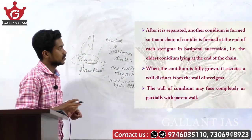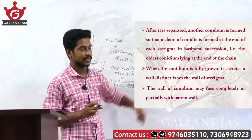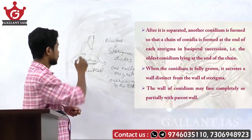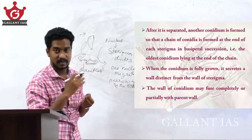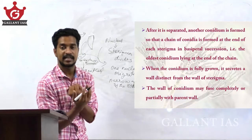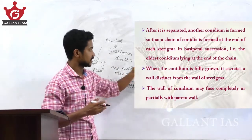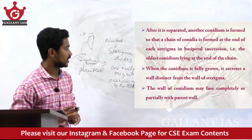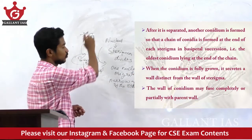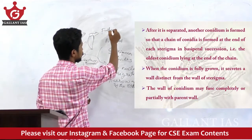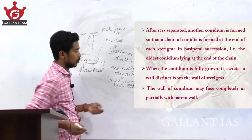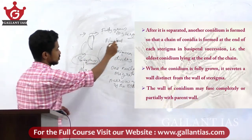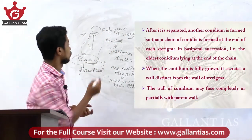After it is separated, another conidium is formed, so that a chain of conidia is formed at the end of the sterigma in basipetal succession — that is, the oldest conidium lies at the end of the chain. When the conidium is fully grown, it secretes a distinct wall from the wall of the sterigma.